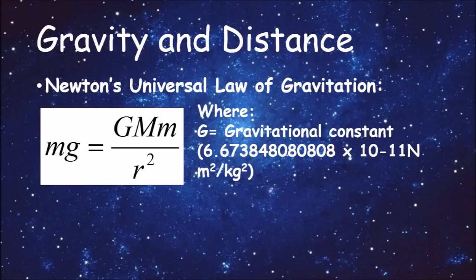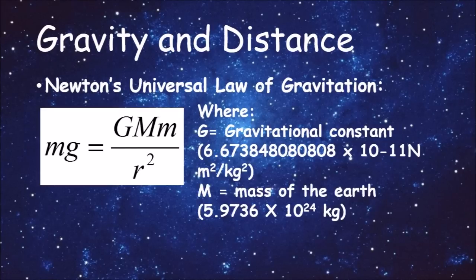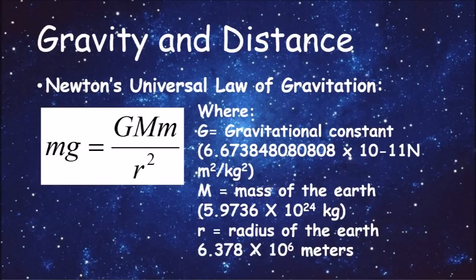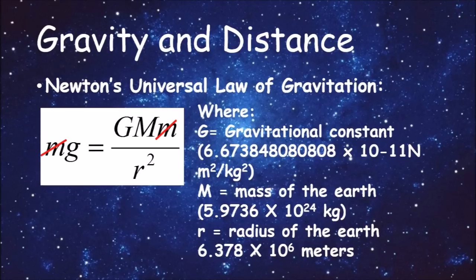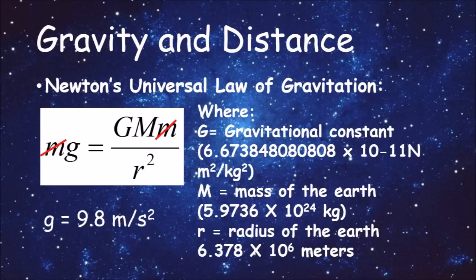The relationship between gravity and distance is expressed in Newton's Universal Law of Gravitation, where big G is the gravitational constant, big M is the mass of the Earth in kilograms, R is the radius of the Earth in meters, and little m is the mass of whatever body gravity is acting on — but this can cancel out for our purposes. When you plug in all the numbers and solve for G, you get 9.8 meters per second squared. Yes, gravity is a unit of acceleration.